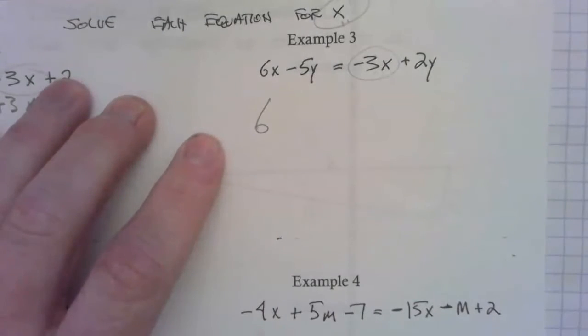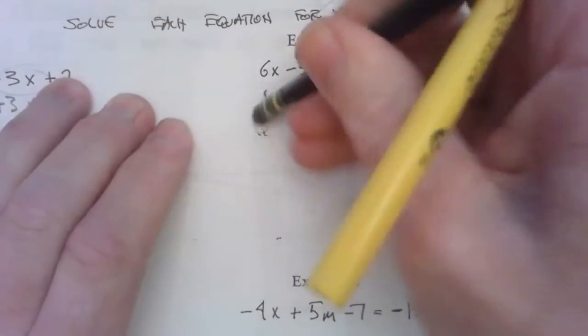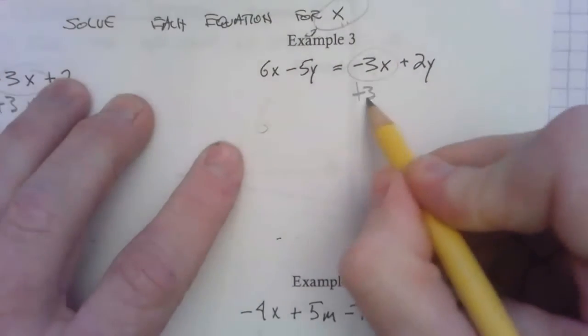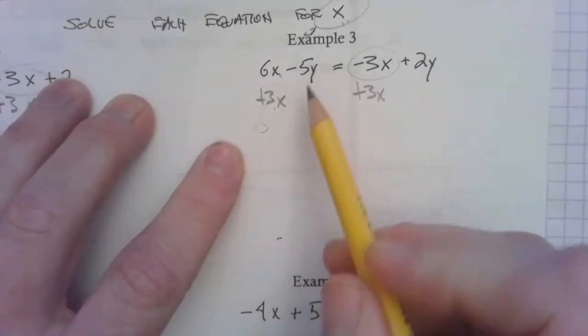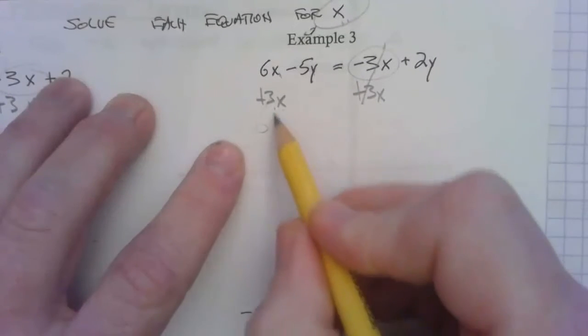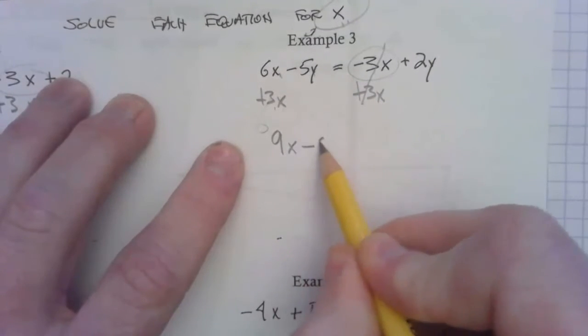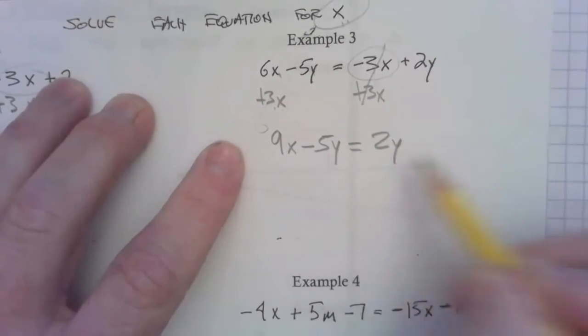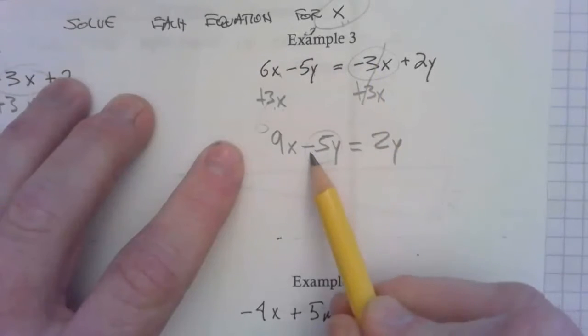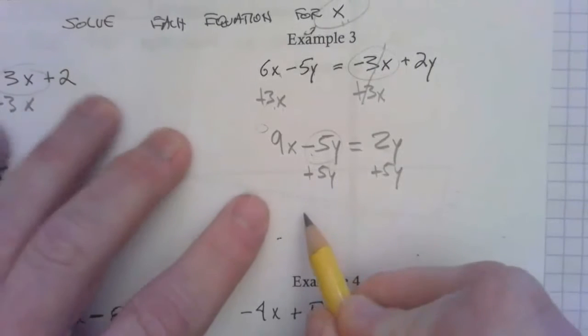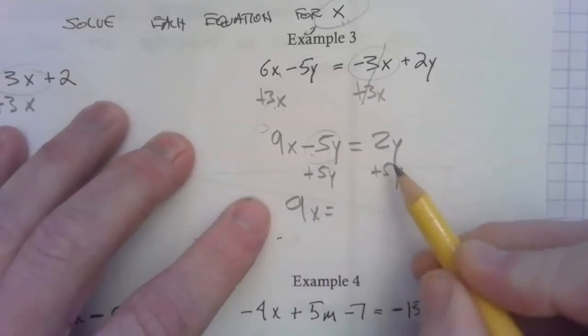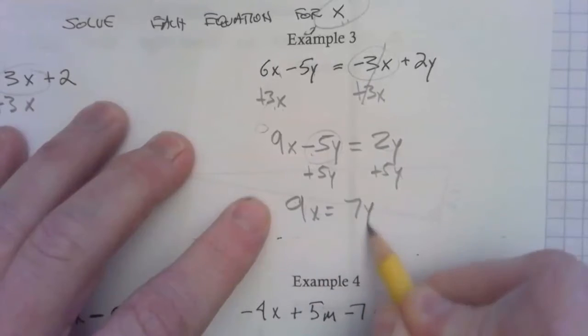So I'm going to add 3x to both sides, and I can only add the x with another x, I can't add it with a y, they're different things. So here it goes away, and I have 9x minus 5y equals 2y. Well, y and an x, and we're solving for x, we've got to get it by itself. So I'm going to add 5y to both sides. That gives me 9x equals, I can add these together because they're both y's, 7y.